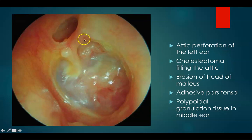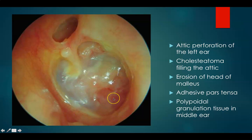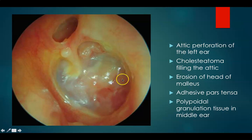This is an attic perforation of the left ear. You can see a clear attic perforation with erosion of the head of malleus, and there is complete adhesive otitis media of the pars tensa — the pars tensa has completely stuck onto the promontory. You can even see polypoidal granulation tissue inside the middle ear.